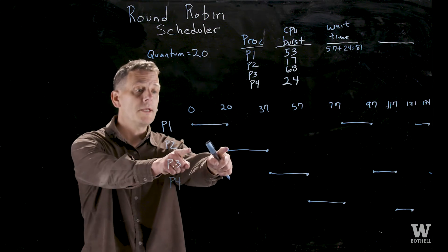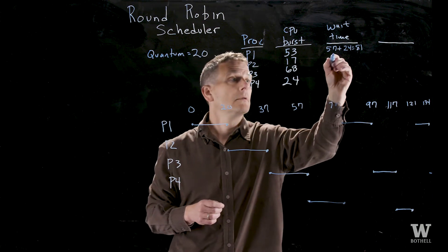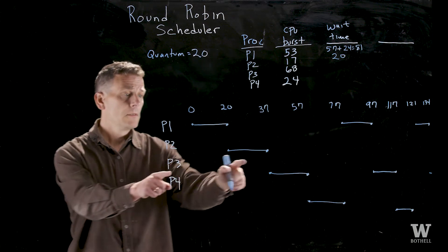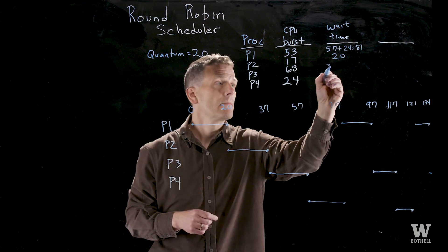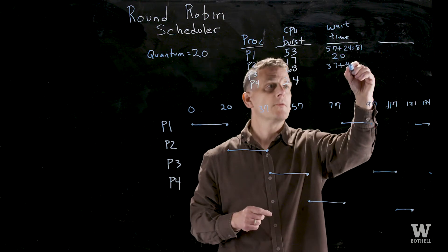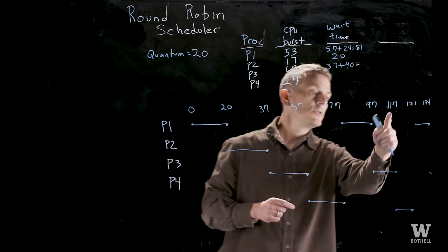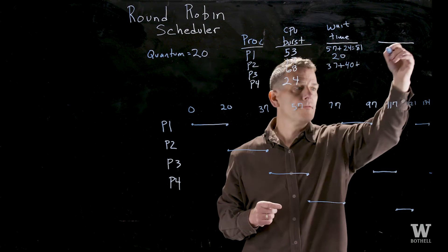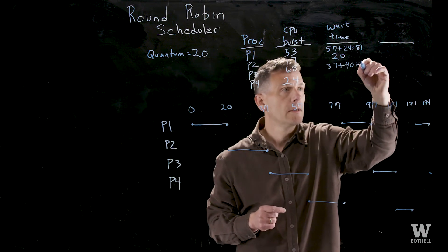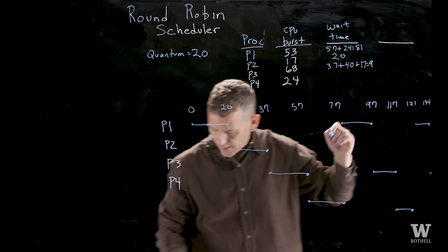Process 2 just waited 20 time units. Process 3 waits 37 and then this chunk of time between 57 and 97 which is 40, and then between 117 and 134 which is 17, and that ends up equaling 94.